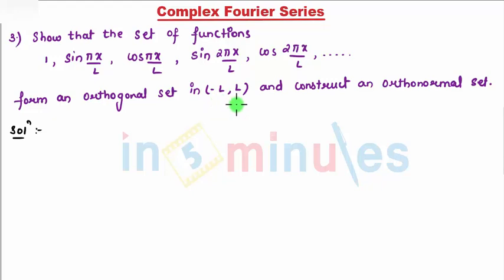So students, what is important here - if you see the series, it starts with 1, then sin πx/L, then cos πx/L, then sin 2πx/L, then cos 2πx/L. That means you need to understand that they have started with sine 0, meaning your n value started with 0, 1. When it starts with 0, obviously sine 0 will be 0 and cos 0 will be 1. So that's why it started with 1, and then sine, then cos, then sine, then cos.